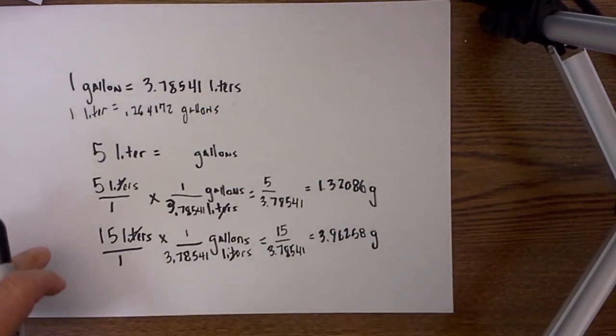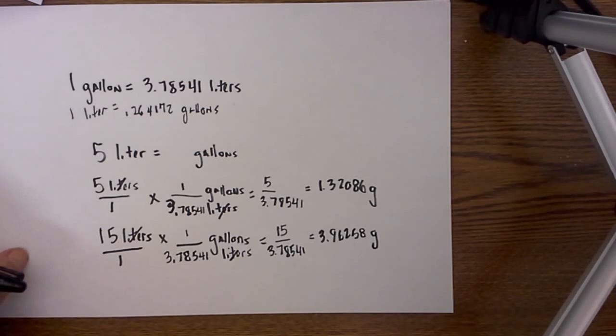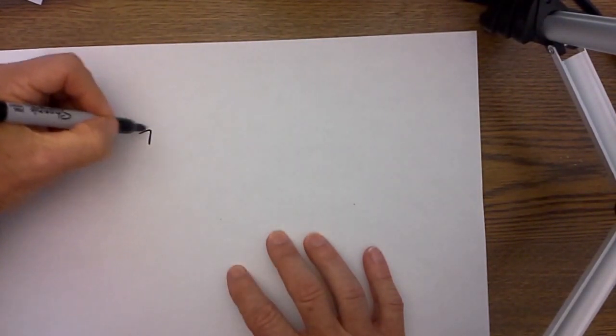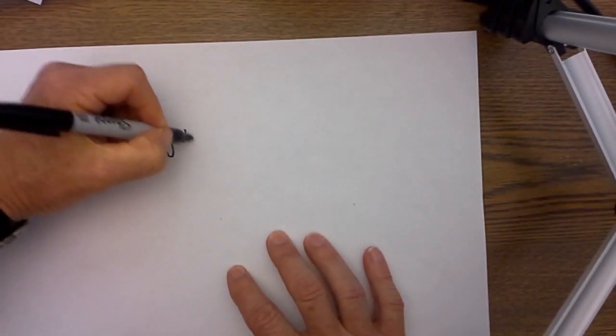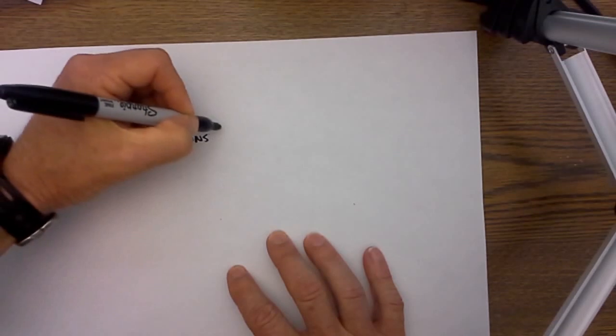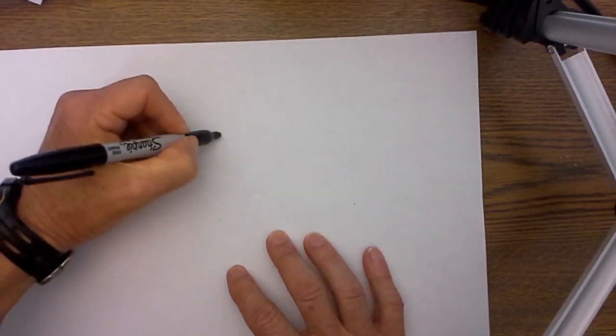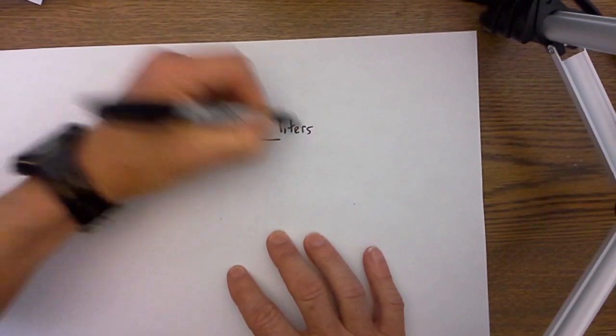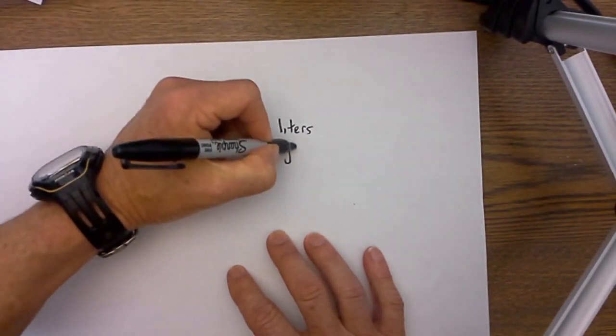Now let's do another example. Let's go the other way, and that is convert from gallons to liters. So say I have 7 gallons and I want to know how many liters that is. I now place liters on top because I want to go to liters, and place gallons on the bottom.